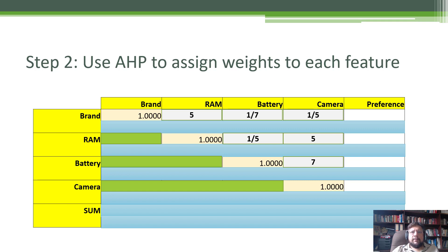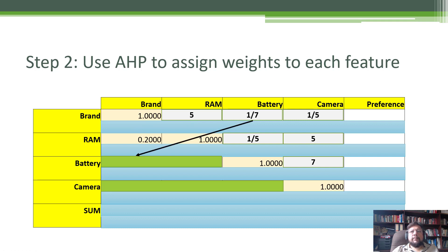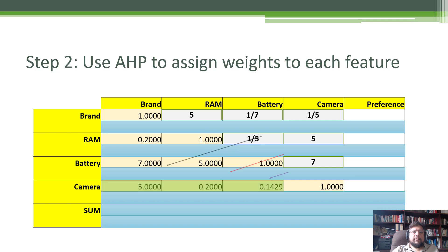Once you've done these preferences, you complete the matrix by inverting. So you already have brand versus RAM — use the same number, now flipped. RAM versus brand: the number is flipped, so one over five is 0.2. Then RAM versus battery is also flipped using the same method. You flip the cells and complete the matrix. So now our matrix is completed.